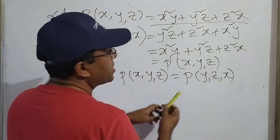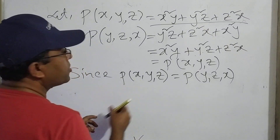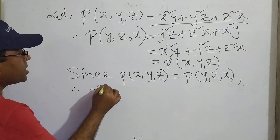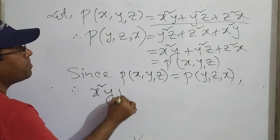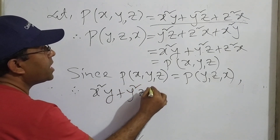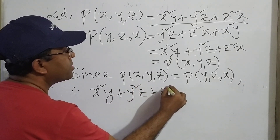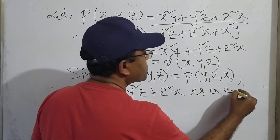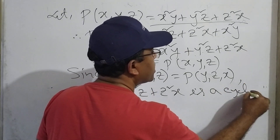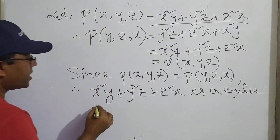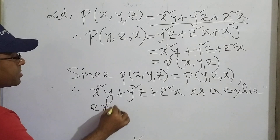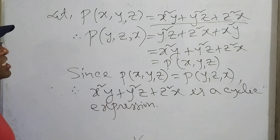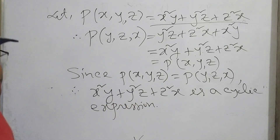Since P of x, y, z equals P of y, z, x — the first variable replaced by second, second by third, third by first — therefore x squared y plus y squared z plus z squared x is a cyclic expression.